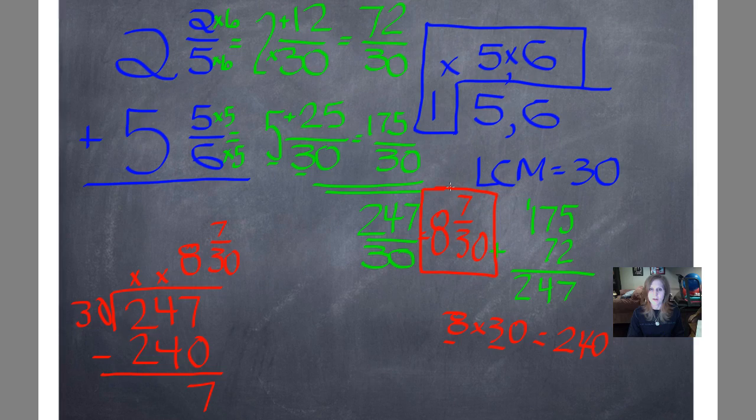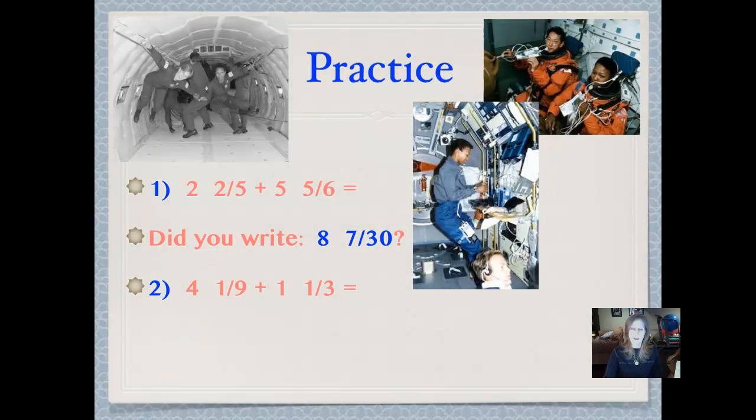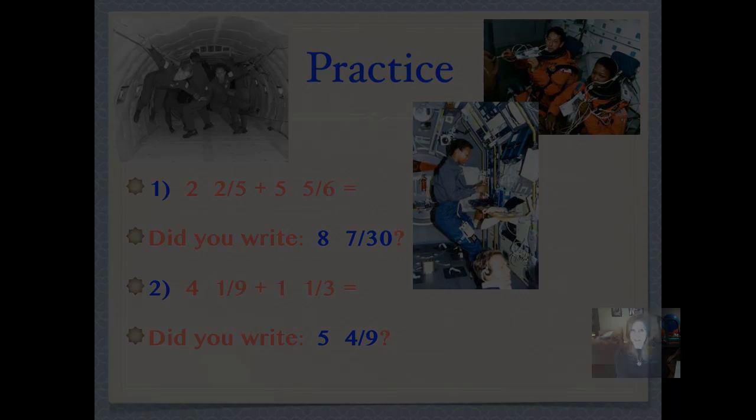And 7 will not divide evenly into 30, so I'm done. So, as I write my final answer, 8 and 7 thirtieths, that's a totally huge amount of work, but what a fabulous amount of work it is. Hopefully you organized it a little better on your paper. I'm kind of limited to space with the bamboo tablet. Number 2, 4 and 1 ninths plus 1 and 1 third. Pause it and push play when you're ready. Did you write 5 and 4 ninths? Let's work that one together.